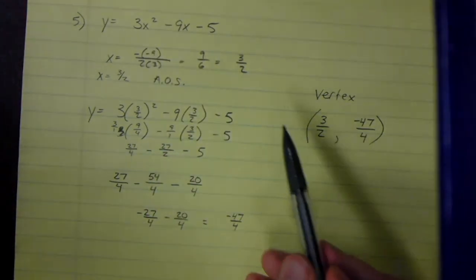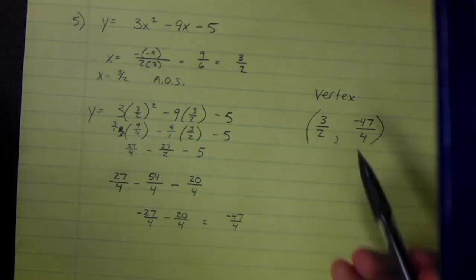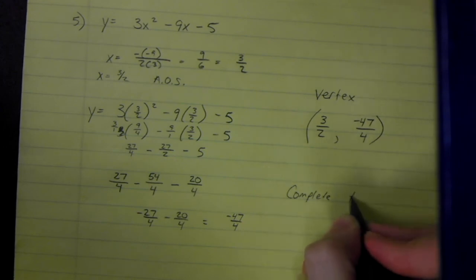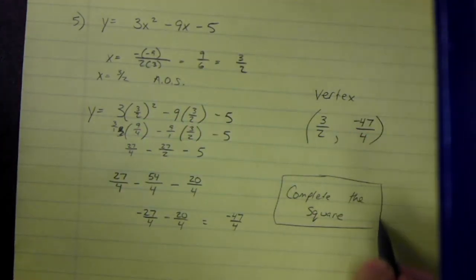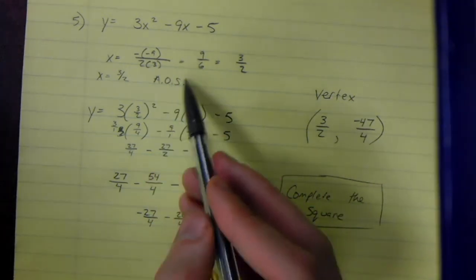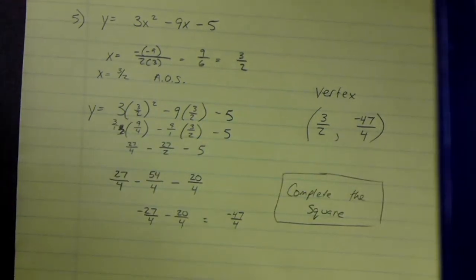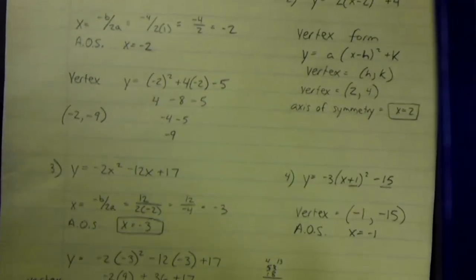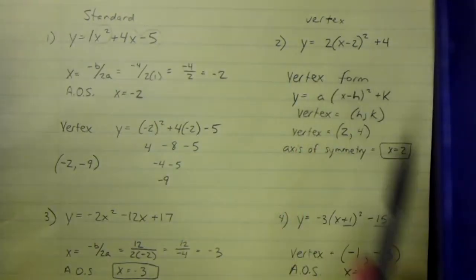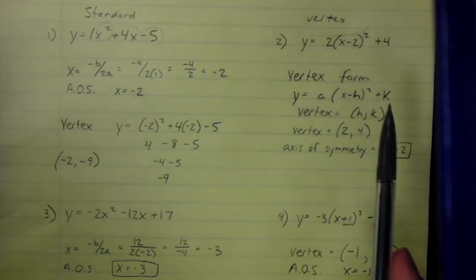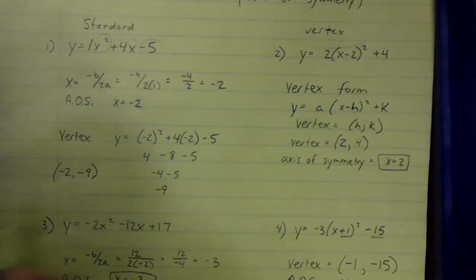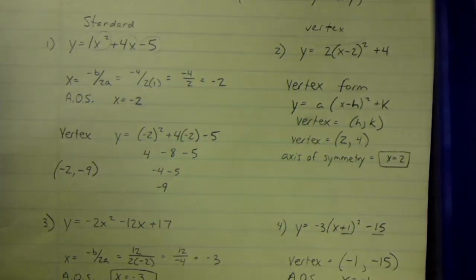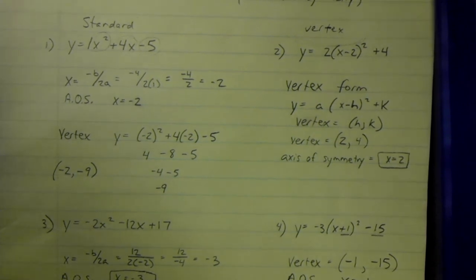Standard form is not super fun for finding the axis of symmetry and vertex. Look forward to a future video where I talk about completing the square, which is a method to convert from standard form into vertex form — it's much less work than all of this. Vertex form is great for finding the vertex, while standard form's main benefit is that it's easy to find the y-intercept. If you have any questions, feel free to leave a comment below. Good luck!